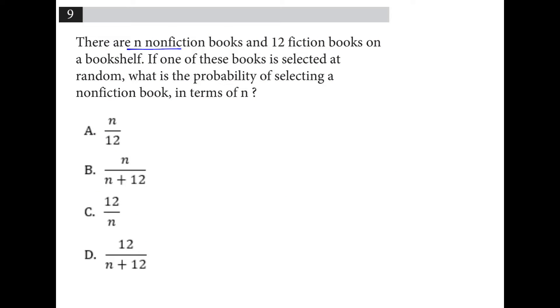There are n non-fiction books and 12 fiction books on a shelf. So the total number is 12 plus n. What's the probability of selecting a non-fiction book in terms of n? So n out of the total 12 plus n.